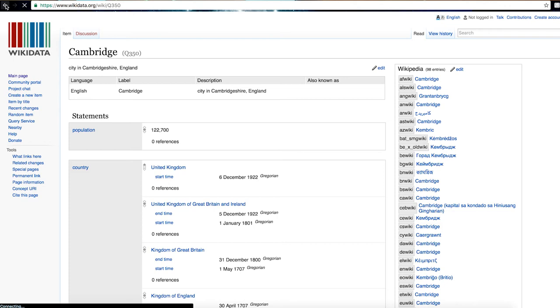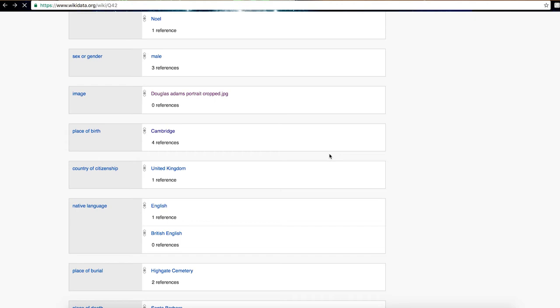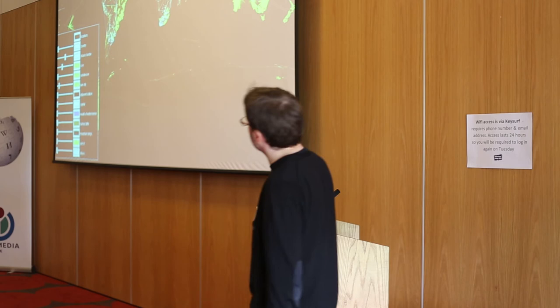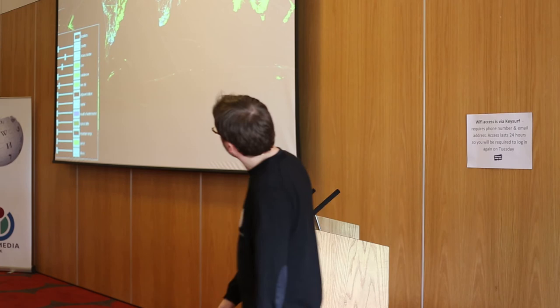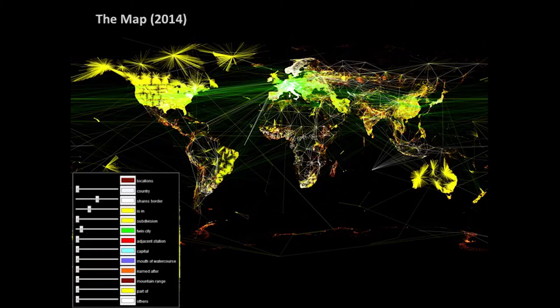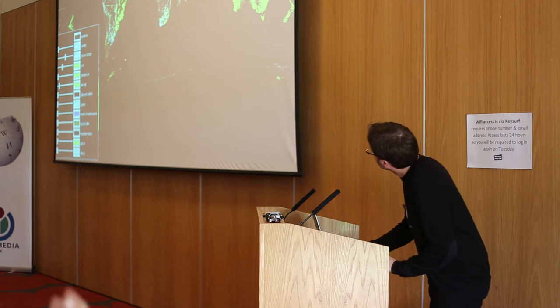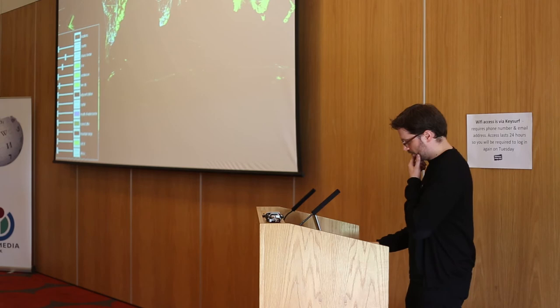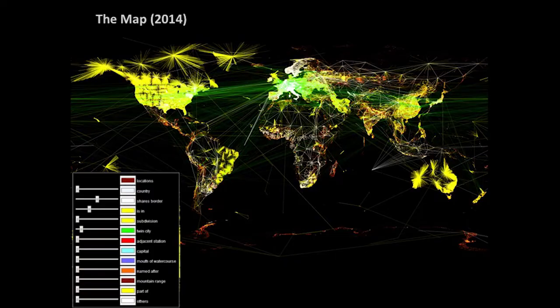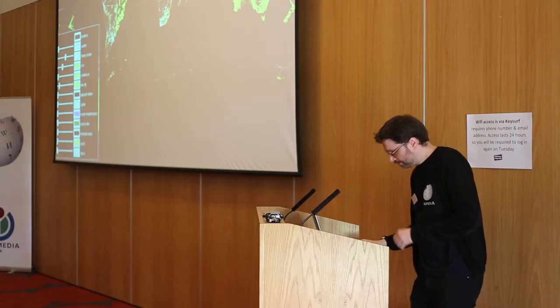We can visualize this linked data in terms of the different statement types. Up at the top left there are some yellow bursts — this is linked data related to location, showing how a city is linked to the state it's in, or the state to the country. There are also green links showing twin city information. This visualization, from 2014, shows the sort of power and reach of how Wikidata is connected.